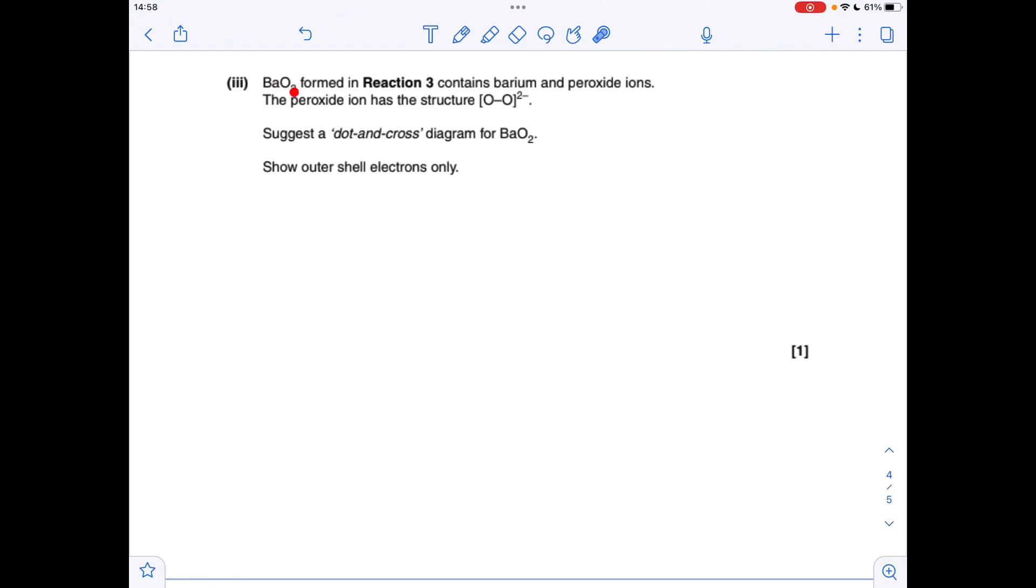And the final question, we're told that this oxide of barium formed in reaction 3 contains barium ions and peroxide ions, and we've been given the formula for the peroxide ion. The easy one is the barium 2 plus ion. Barium's in group 2, so it forms a 2 plus ion, loses its two outer electrons. So I tend to draw a full shell of 8 electrons, and I use crosses for my metal.